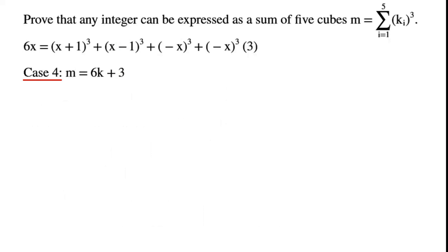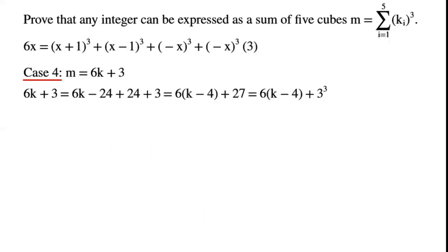Case 4: n equals 6k plus 3. This can be written as 6k minus 24 plus 24 plus 3, which equals 6 times (k minus 4) plus 27, which equals 6 times (k minus 4) plus 3 cubed. Let j equal k minus 4. We have m equals 6j plus 3 cubed.